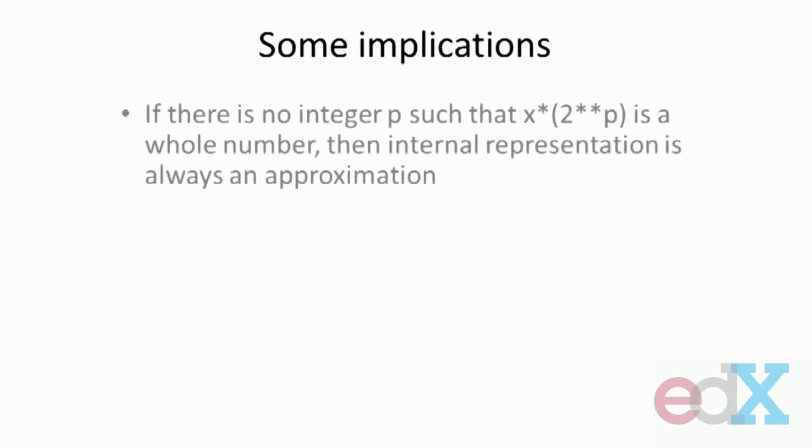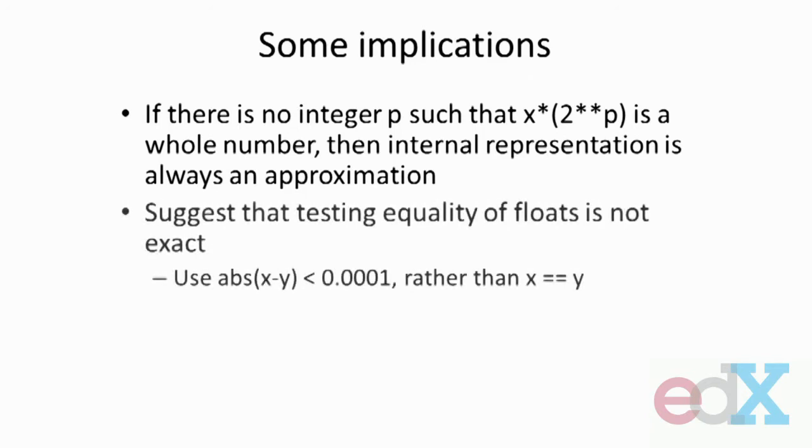So what's one of the implications? If there is no integer p such that x times 2 to the pth power is a whole number, then the internal representation is always going to be an approximation. And in fact, what happened here was that the Python system eventually stopped trying to expand it out any further and simply gave us a representation out to some arbitrary number of bits that are set by the internals of the Python system. So if it's not something that can be turned into a whole number by a power of p, it's always going to be an approximation. This has an important implication that says, well, I want to test two floats to see if they're the same. I shouldn't use something like this, because it might not be true, because the approximations may be slightly different. I'm always better basically saying, is the absolute difference between them smaller than some arbitrary amount? And we're going to use that a lot. This is a standard place where people get into trouble by trying to test the equality of two floats and then being surprised when, in fact, the code doesn't do what they'd like.